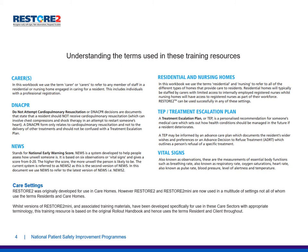A number of terms are used throughout these training resources. 'Carers' is a generic term referring to any member of staff in a residential or nursing home engaged in caring for a resident. DNA CPR refers to do not attempt cardiopulmonary resuscitation — documents that state the resident should not receive CPR, drawn up in conjunction with the residents themselves. NEWS stands for National Early Warning Score, or NEWS2 as it's known at the moment. In this workbook we use the terms residential and nursing to refer to all the different types of homes that provide care to residents.